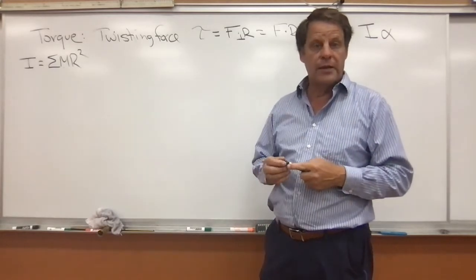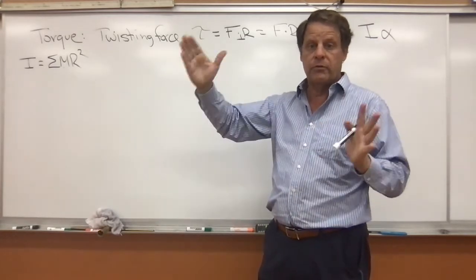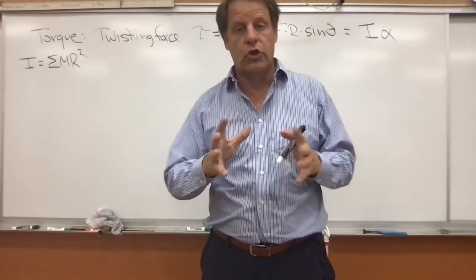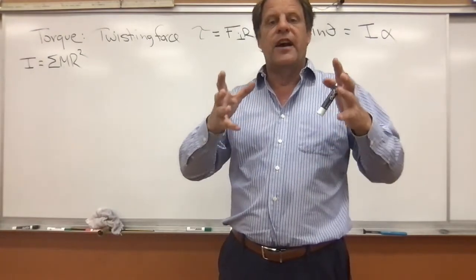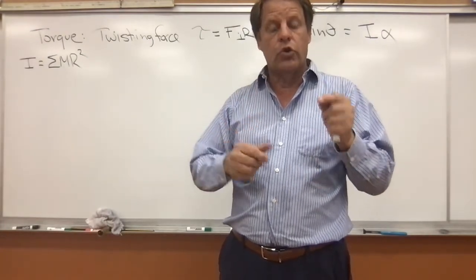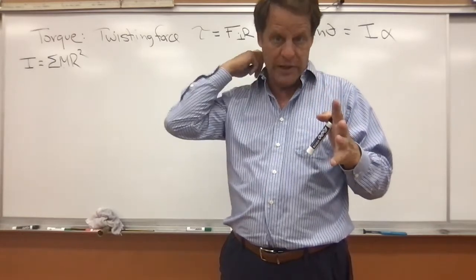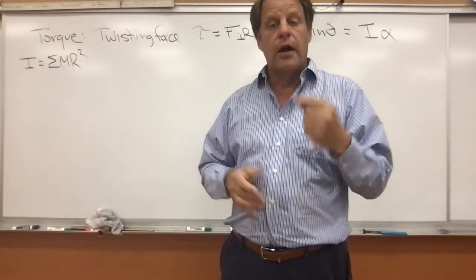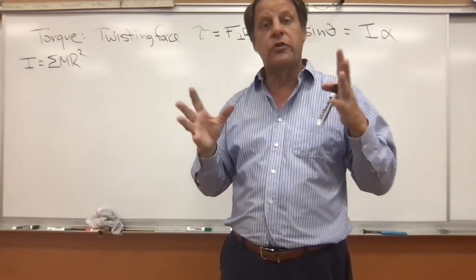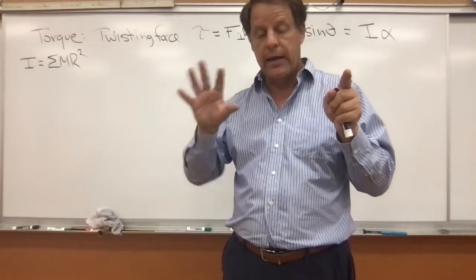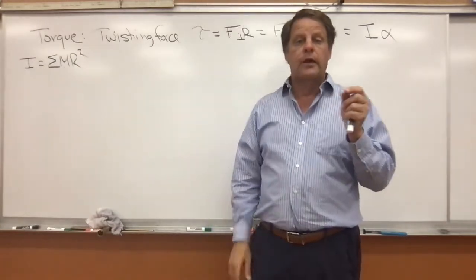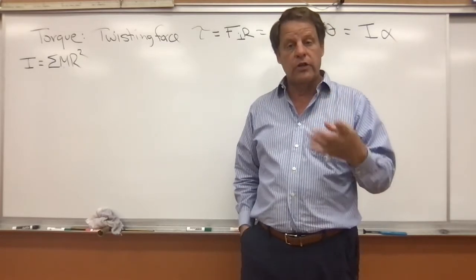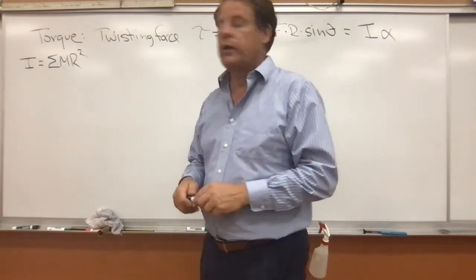I is the rotational analogy to mass. I is equal to the sum of the MR squared. If we have discrete things, we can take mass times radius squared and we will have the moment of inertia. Inertia is a property of matter that resists a change in its state of motion.